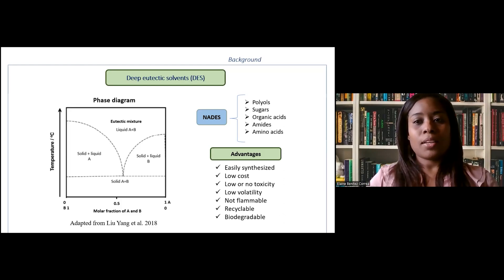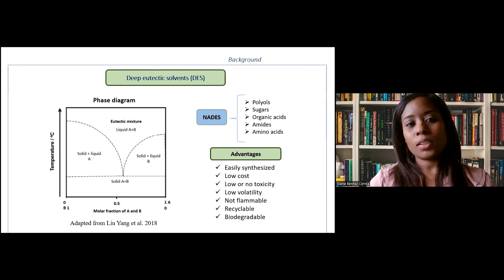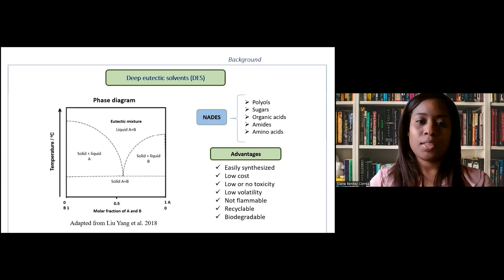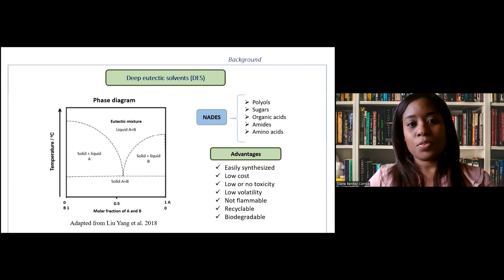However, deep eutectic solvents have important disadvantages because they have high viscosity. High viscosity represents a limitation during extraction processes. A strategy frequently applied to decrease viscosity is dilution, but this alternative weakens molecular interactions. That's why the greatest effort in this area has been focused on effective design of these solvents to optimize extraction processes. Designs are based on modification of physical properties by component combination, the molar ratio, and also the water content.